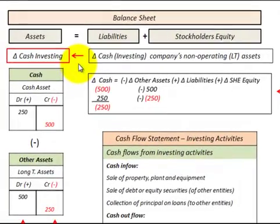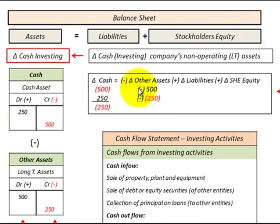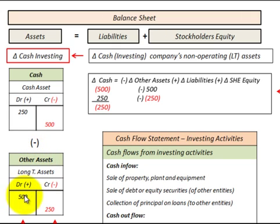Let's look at our change in cash for investing activities, which is where we look at the company's non-operating long-term assets. If we had an increase in these long-term non-operating assets, that equates to a decrease in our cash. And if we had a decrease in these long-term assets, it would be an increase in our cash account. Looking at T-accounts, an increase or debit in long-term assets would be a credit to cash, and vice versa, a reduction in long-term assets would be a debit or increase in cash.